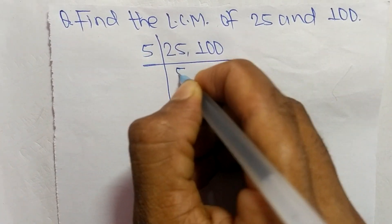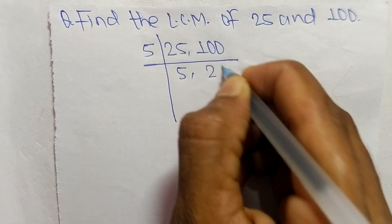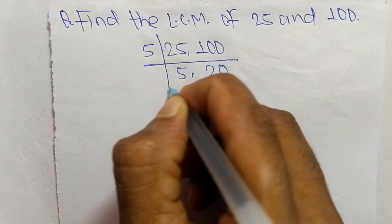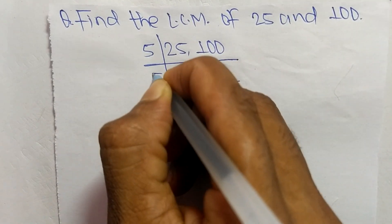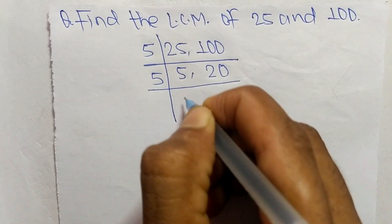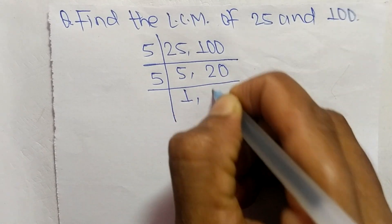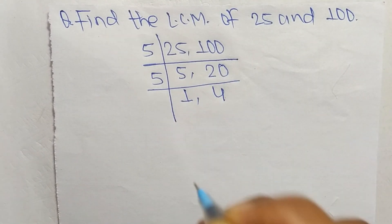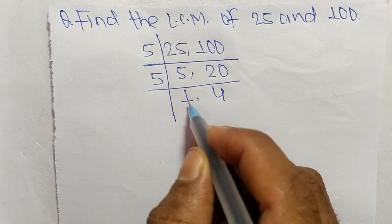5 times 5 equals 25, and 5 times 20 equals 100. So both are divisible by 5. Dividing again: 5 times 1 equals 5, and 5 times 4 equals 20.